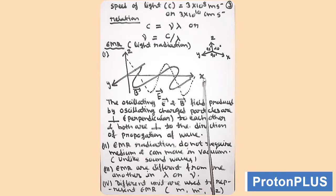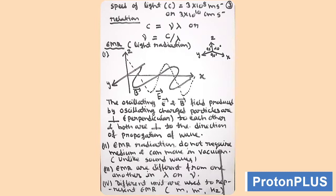A second property of electromagnetic radiation is that EMR does not require any medium. These radiations can move in vacuum, but sound waves require a medium. Electromagnetic radiations differ from each other in wavelength or frequency. We use different units for representing electromagnetic radiation — meter inverse for wave number, meter for wavelength, hertz for frequency, and so on.